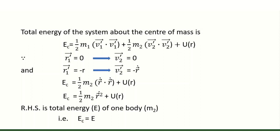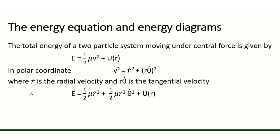This shows that the total energy of one body M2, EC, equals E. This discussion shows that when one body moves about another massive body — the sun in this case — it is purely a one-body problem, because the mass of the sun is very much larger than the planet's mass.